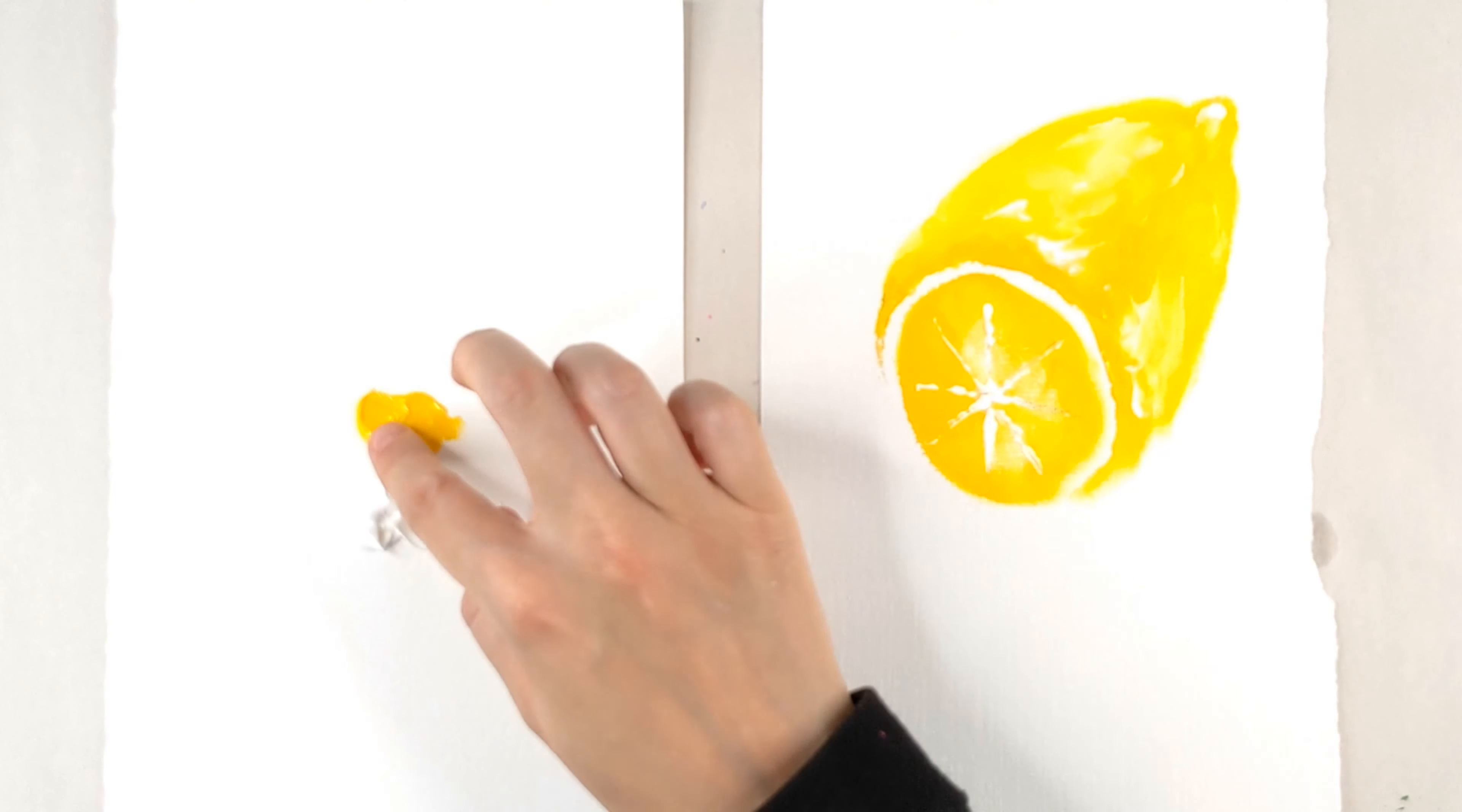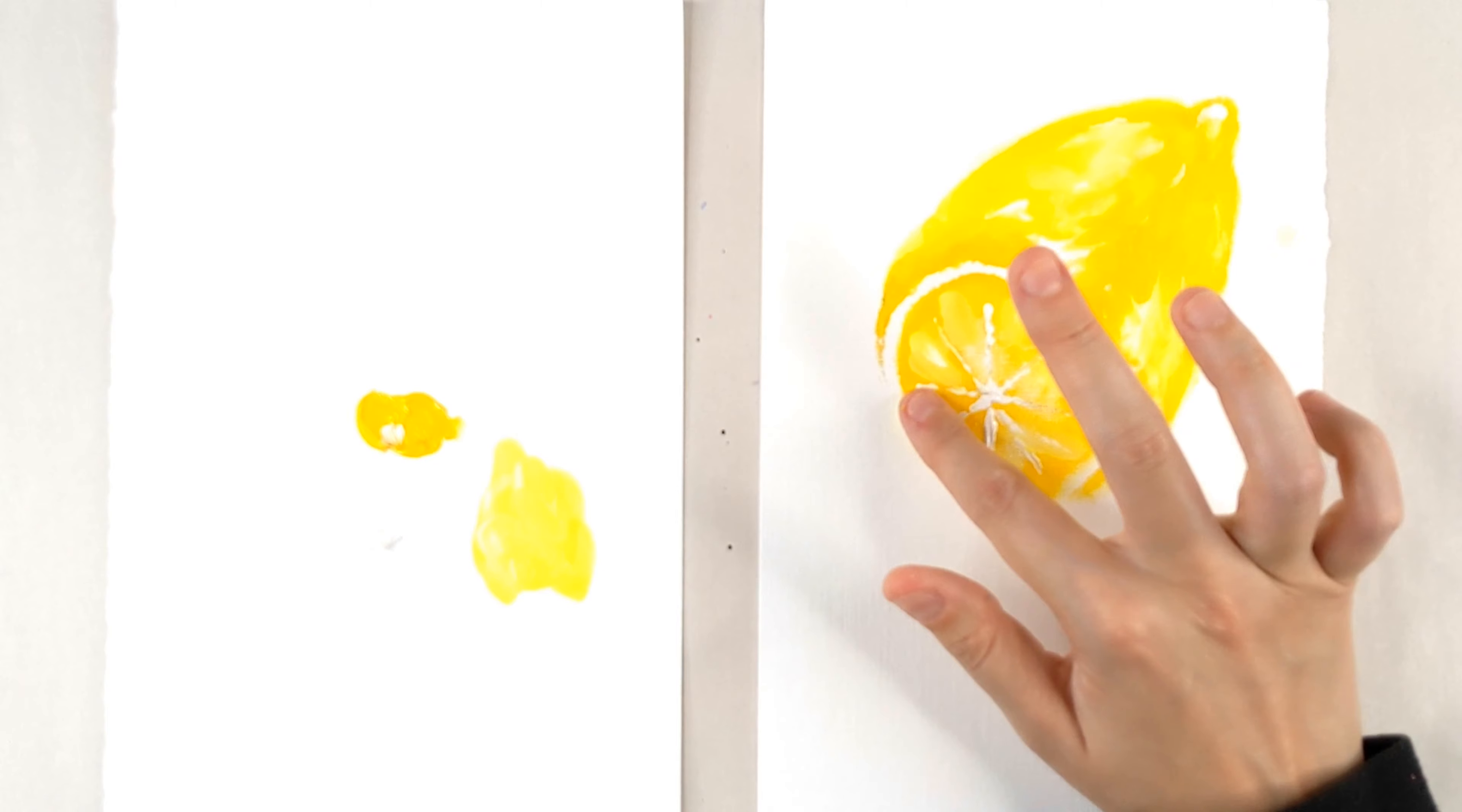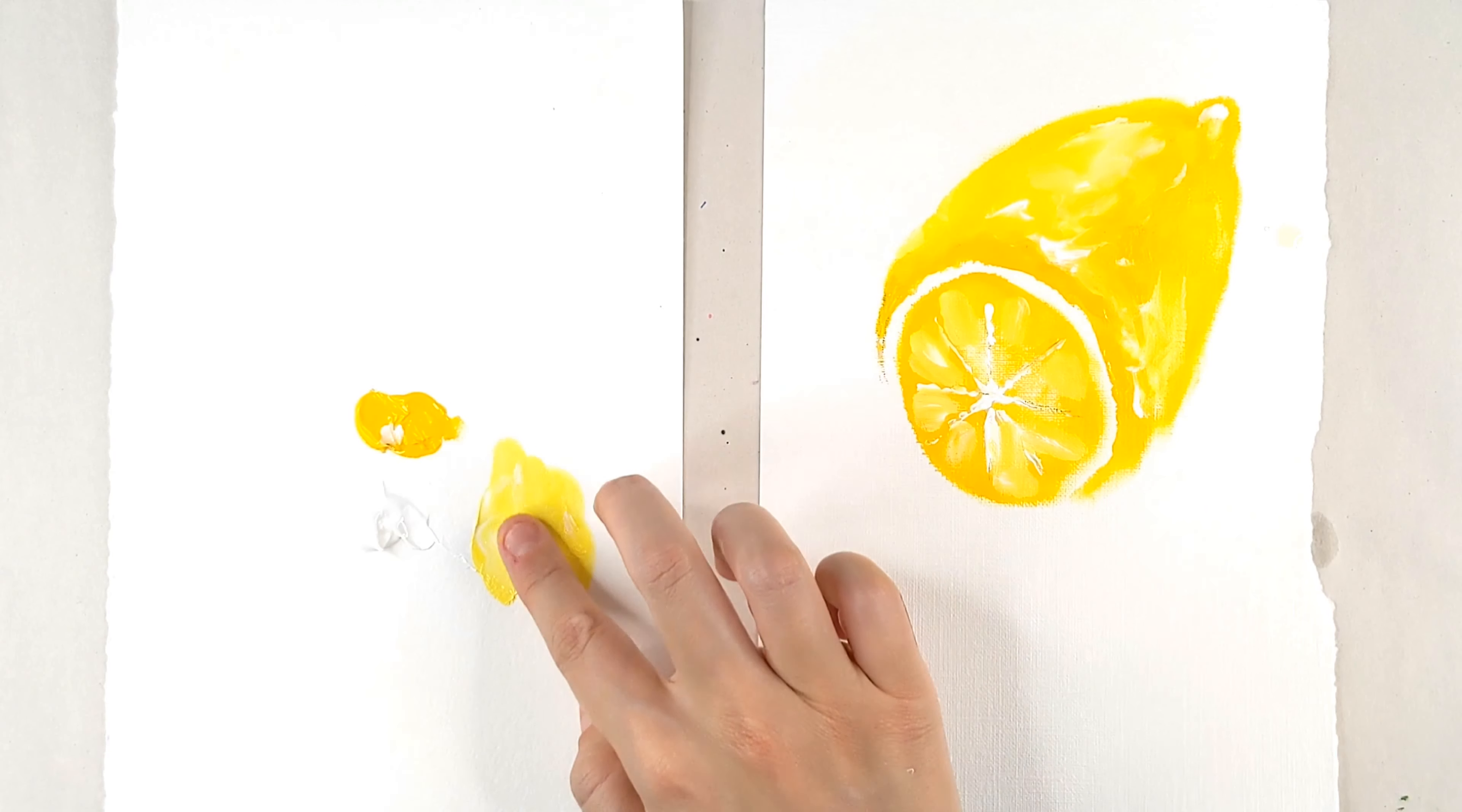Now I can take my white and mix it with my yellow and create this super light yellow color. I'm going to water that down a little bit and throw a couple little lines. Just throw a little line in each of those little wedges that I made. Give it a little texture.